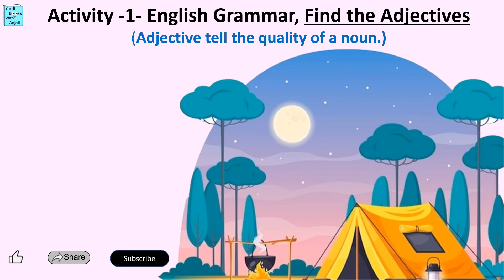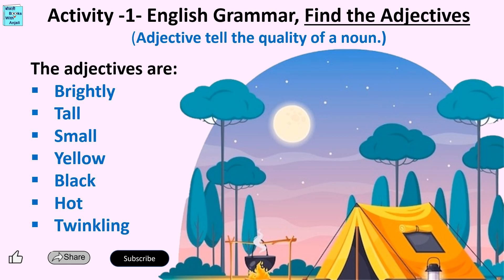Adjective words tell the quality of a noun. Look at the picture carefully and let's find the adjectives related to this picture. The adjectives are: brightly, tall,